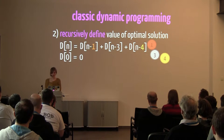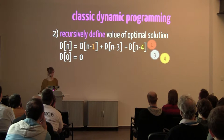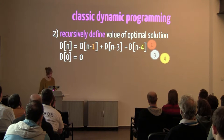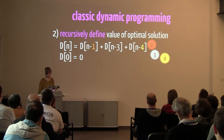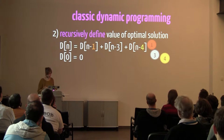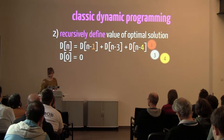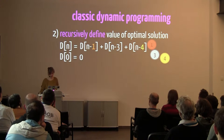The second step: recursively define the value of an optimal solution. We do this with recurrences — equations where d(n) appears on the right side, showing recursion. For our money-changing problem, d(n) is the number of decompositions for amount n. We define d(n) in terms of smaller subproblems by subtracting one of the coins (one, three, or four). The base case is zero, where we cannot decompose further.